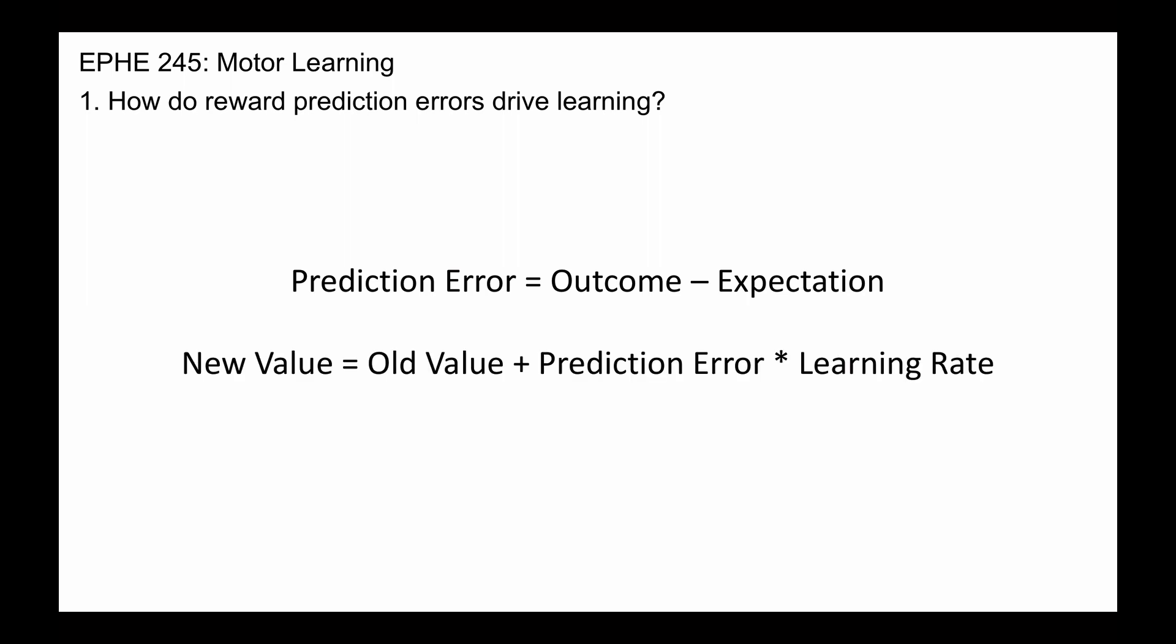What do we do with the prediction error? We use the prediction error to update values. Classically, the new value is equal to the old value plus the prediction error times a learning rate. And what does the learning rate do? It essentially tweaks the prediction error to slow the learning process.